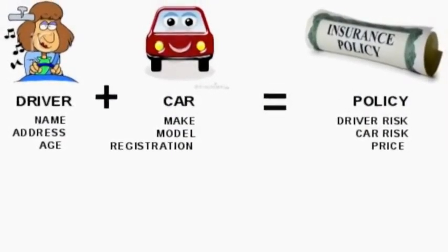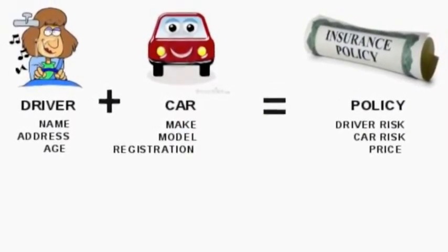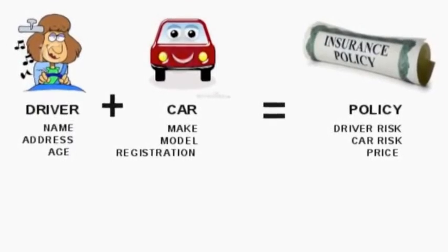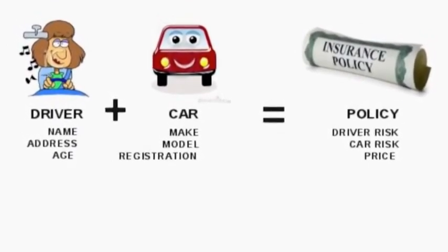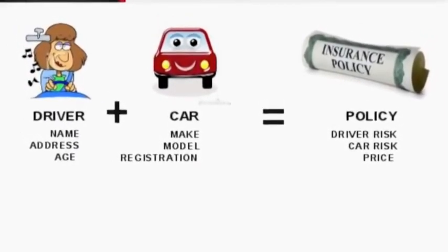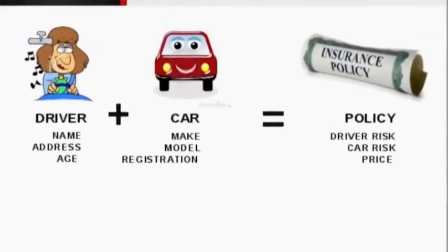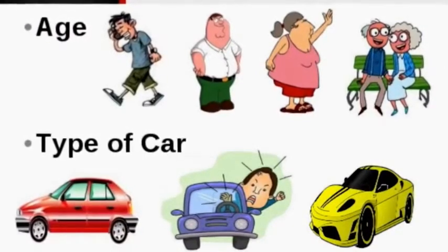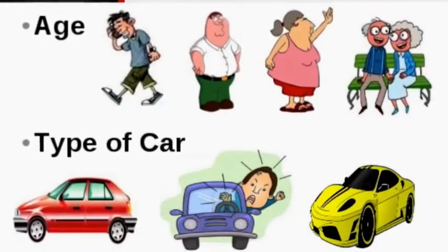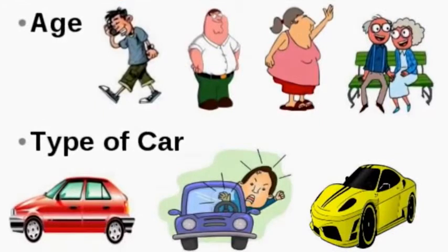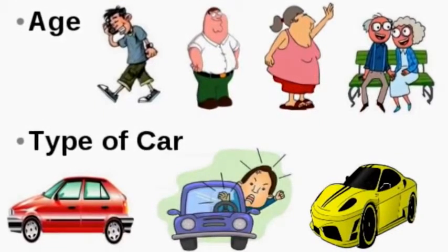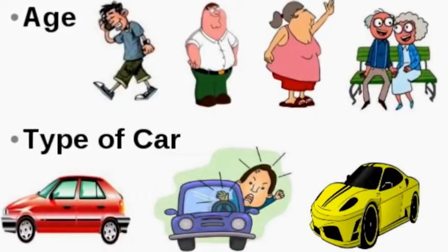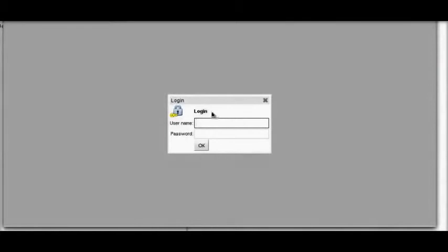The details we enter are pretty simple. We enter the driver's name, address, and age, and then we ask for details around the car: make, model, and registration. We simply make a decision based upon the age of the driver and the type of car he's driving. These are the two factors that control the price.